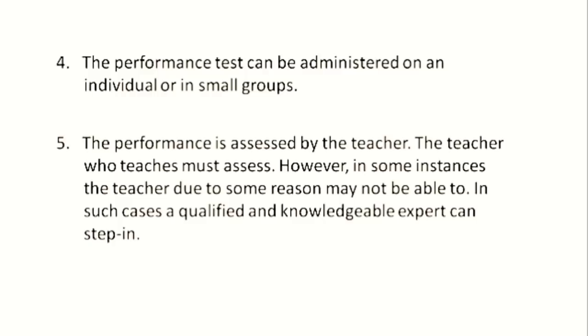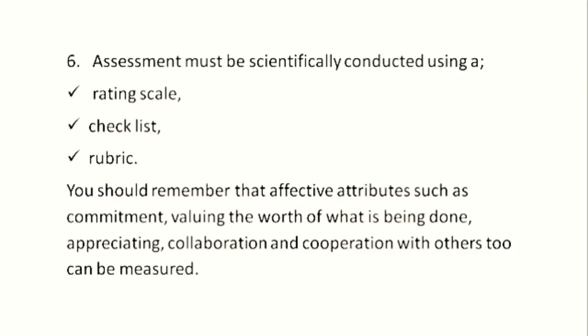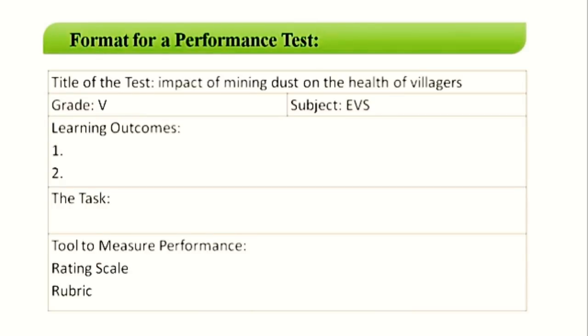The performance task can be administered to groups or done individually, and it is always assessed by the teacher. In the absence of a teacher, it can be assessed by a knowledgeable expert who understands the concept and how to use the designed rubric. Assessment is done by making use of rating scales, a checklist, or a rubric. A performance test should always have a format comprising: the title of the task, the grade, the subject, the learning outcomes, a clear description of the task, and the tool used to measure the learner's performance.